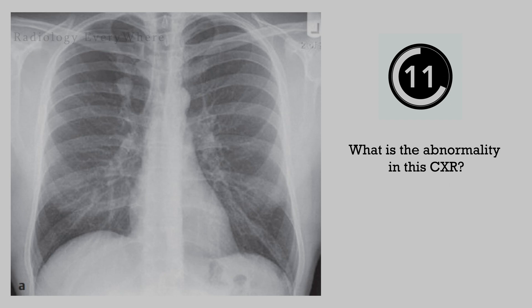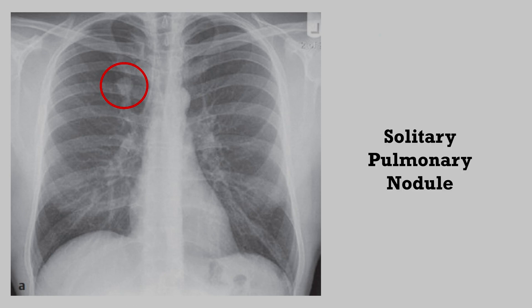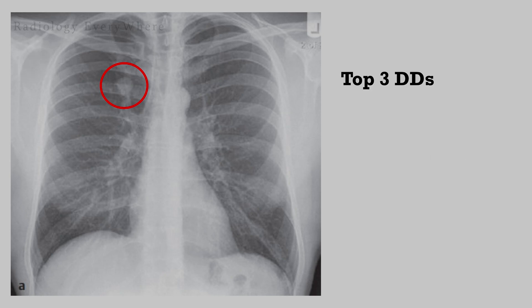The X-ray shows a solitary pulmonary nodule within the right upper lobe, and the rest of the chest X-ray is normal. The key imaging finding is a solitary pulmonary nodule. What could be the differential diagnosis in this case?